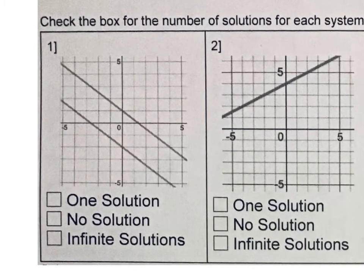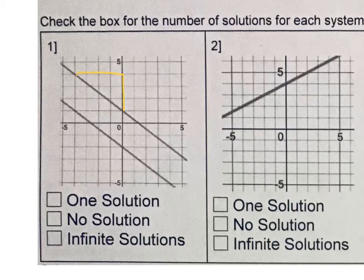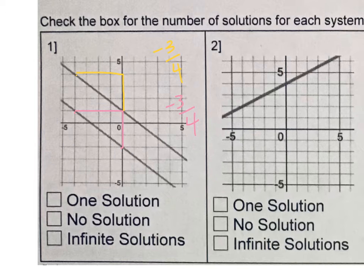When I look at number 1, I notice right away that these are parallel lines. I want to be sure that they're parallel lines, so I'm going to quickly check the slope. I can see it rises 3 and runs backwards 4, so the slope of the first line is negative 3 fourths. The second line is the same — it rises 3 and runs backwards 4. They have the same slope, so they are for sure parallel lines. Parallel lines will never cross, so for number 1, this is no solution.